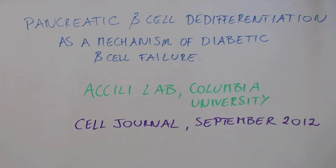This new finding comes from a research article published by the Achille Lab at Columbia University in Cell Journal in September 2012. It is titled Pancreatic Beta Cell De-Differentiation as a Mechanism of Diabetic Beta Cell Failure.